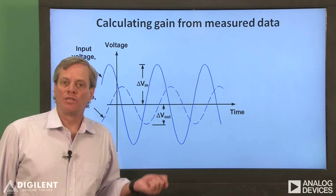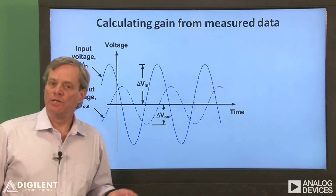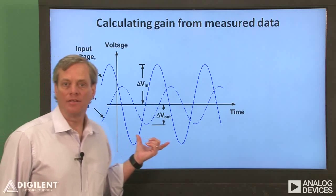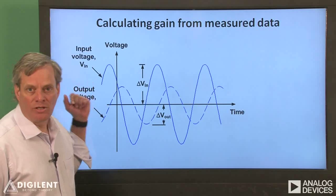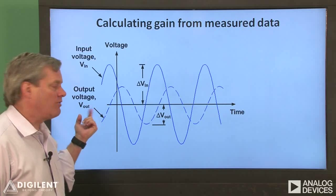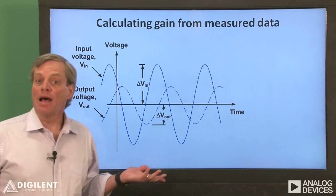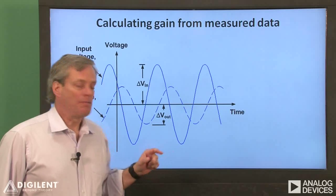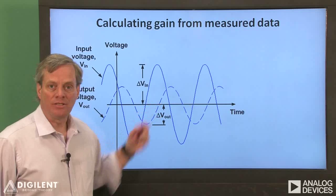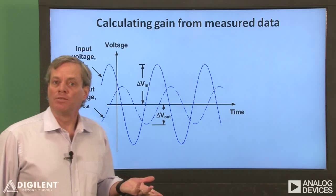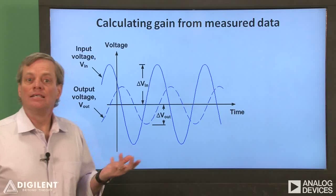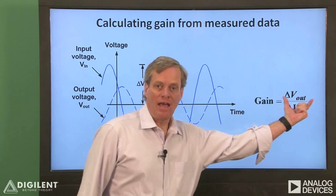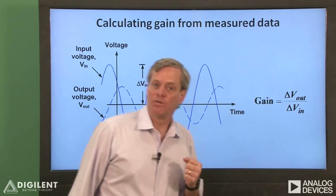Now let's take a look at using measured response data to determine the gain between two signals. Suppose the two signals that we're interested in look like this. V_in is the signal we're considering to be our input and V_out is the signal we're considering as our output. The amplitude of the input sinusoid is ΔV_in, while the amplitude of the output sinusoid is ΔV_out. These two amplitudes are easy to measure using an oscilloscope. To calculate the gain between the input and output, we simply take the ratio of the output amplitude to the input amplitude.